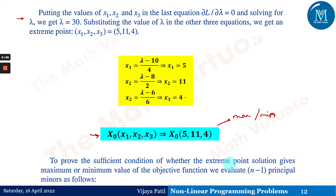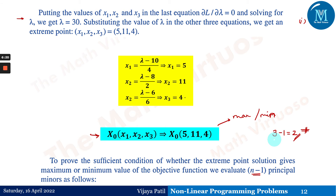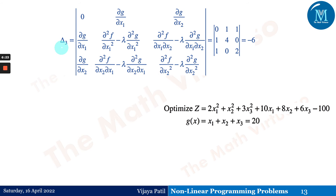To prove the sufficient condition — whether the extreme point gives maxima or minima of the objective function — we need to evaluate n−1 principal bordered minors. Here n = 3, so we calculate 2 bordered minors, delta_3 and delta_4, starting from delta_{n+1} = delta_3. Moving ahead, delta_3 is computed from the bordered Hessian matrix for this optimization problem.